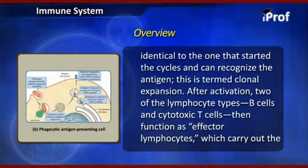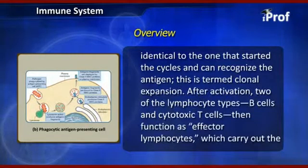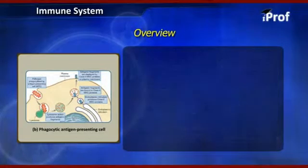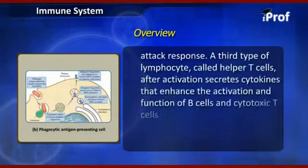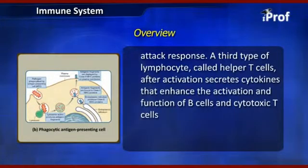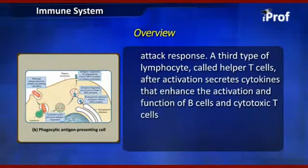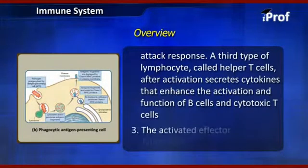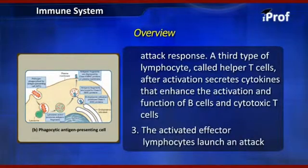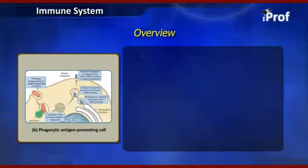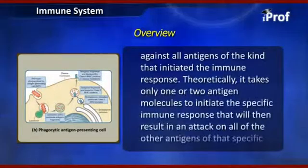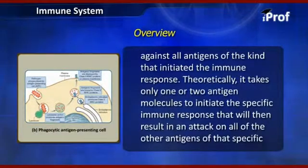After activation, two of the lymphocyte types — B cells and cytotoxic T cells — function as effector lymphocytes, which carry out the attack response. A third type of lymphocyte, called the helper T cell, after activation secretes cytokines that enhance the activation and function of B cells and cytotoxic T cells. The activated effector lymphocytes then launch an attack against all antigens of the kind that initiated the immune response.